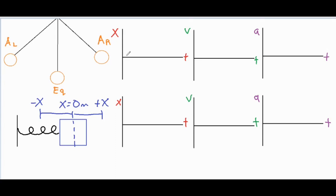We're going to start at our equilibrium position and call that position zero, which means the negative x direction is to the left and the positive x direction is to the right. As we start from the equilibrium position and move to the right, our position is going to increase in the positive direction and then it is going to hit that first amplitude on the right side. You can see the curve is flattening out because the force is increasing to slow down its rise in position.